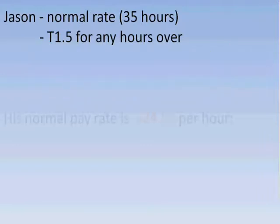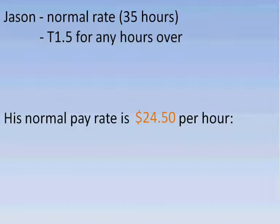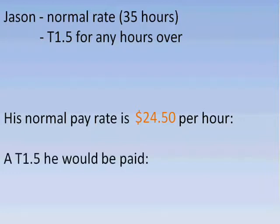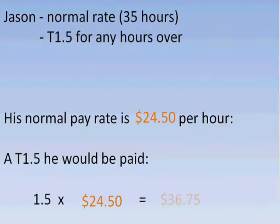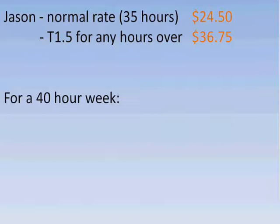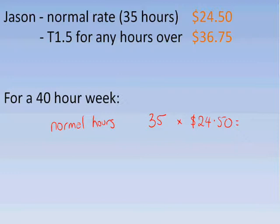If Jason gets paid $24.50 an hour, we can work out how much he'd get at time and a half. We take $24.50 and multiply it by 1.5, so for time and a half Jason would get $36.75. Now, if Jason works 40 hours, the first thing we'd work out is what he gets for the normal rate. For 35 hours — his normal hours — he's getting paid $24.50, so altogether Jason's getting $857.50 for that time.